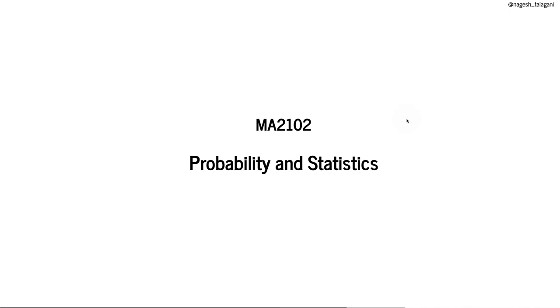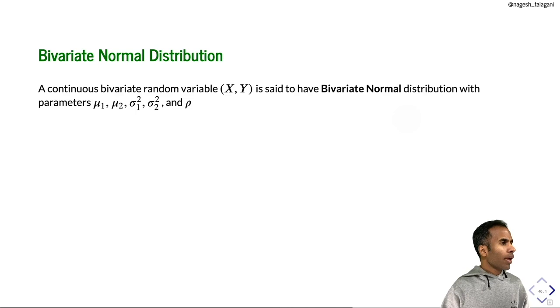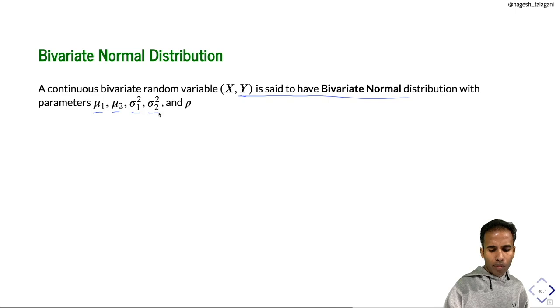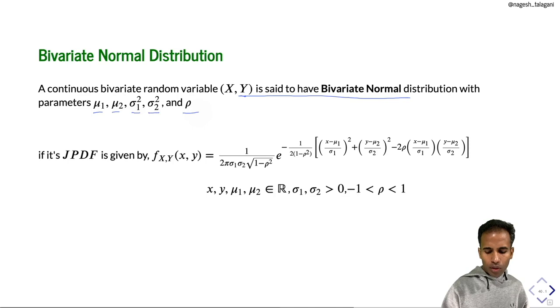In this video I am going to talk about bivariate normal distribution and order statistics. A continuous bivariate random variable x, y is said to have bivariate normal distribution with the parameters mu1, mu2, sigma1 square, sigma2 square and rho if its joint pdf is given by the following formula.